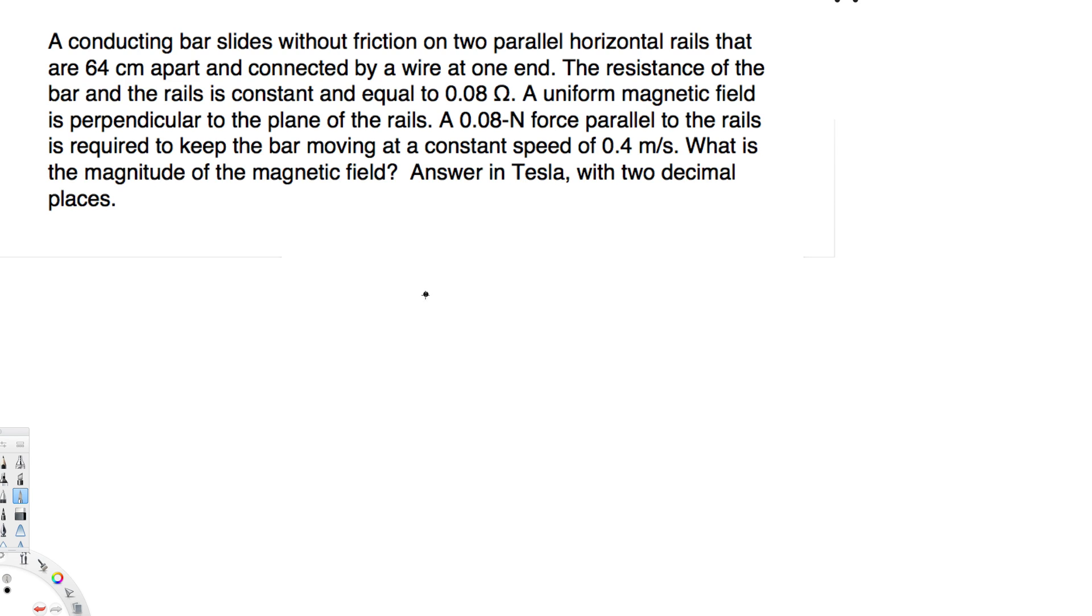What's going on guys, let's look at this problem right here. This question is asking: a conducting bar slides without friction on two parallel horizontal rails that are 64 centimeters apart and connected by a wire at one end. The resistance of the bar and the rails is constant and equal to 0.08 ohm. A uniform magnetic field is perpendicular to the plane of the rails.